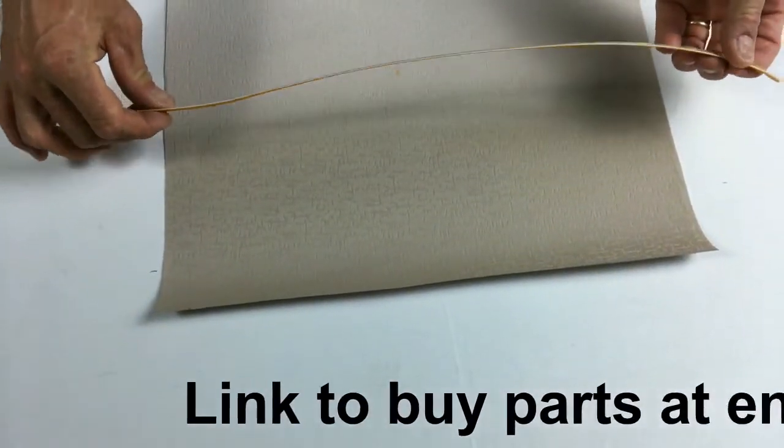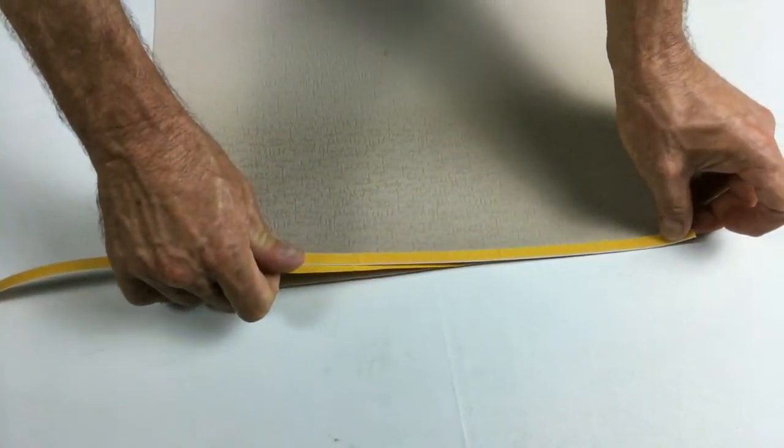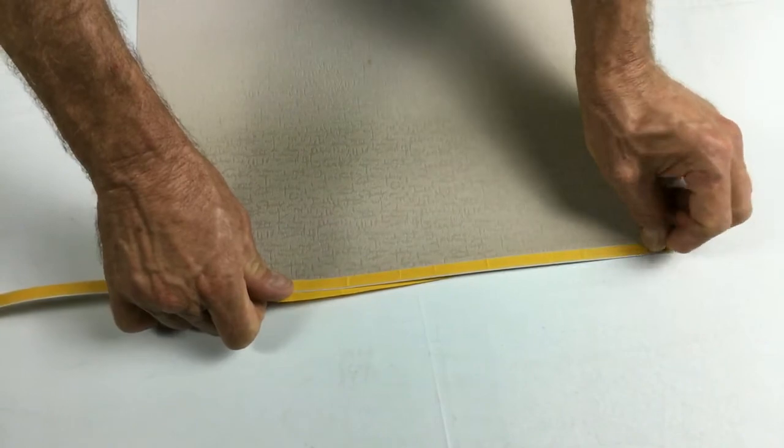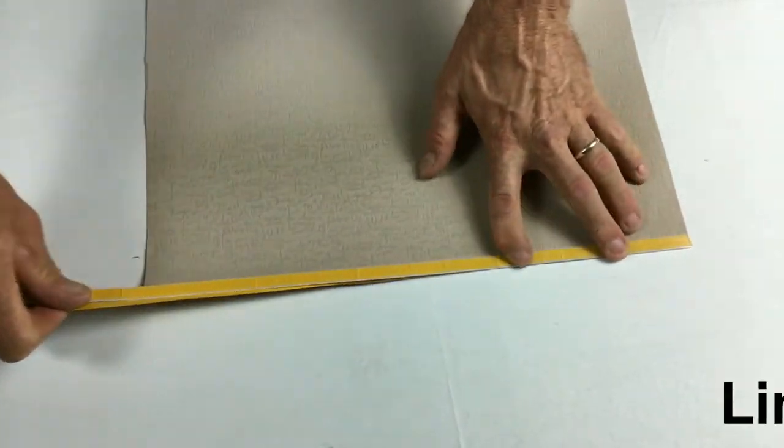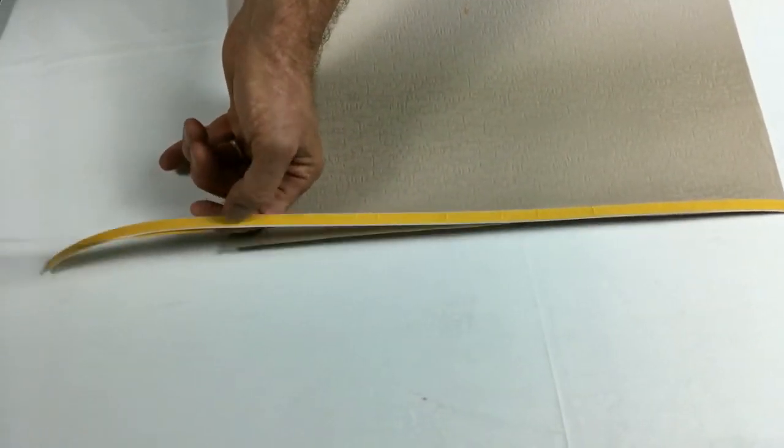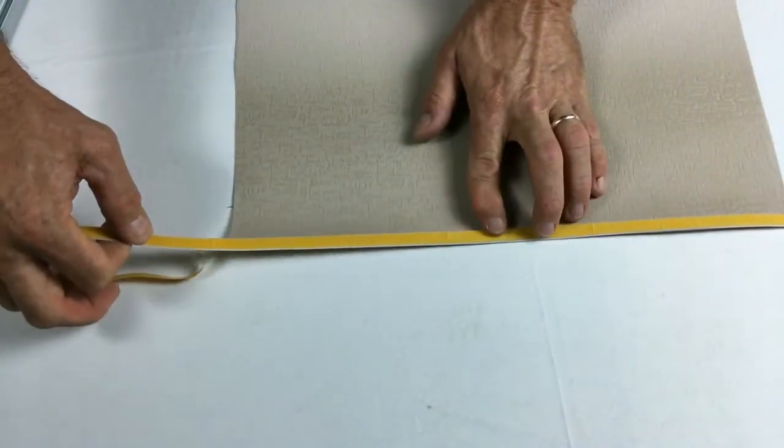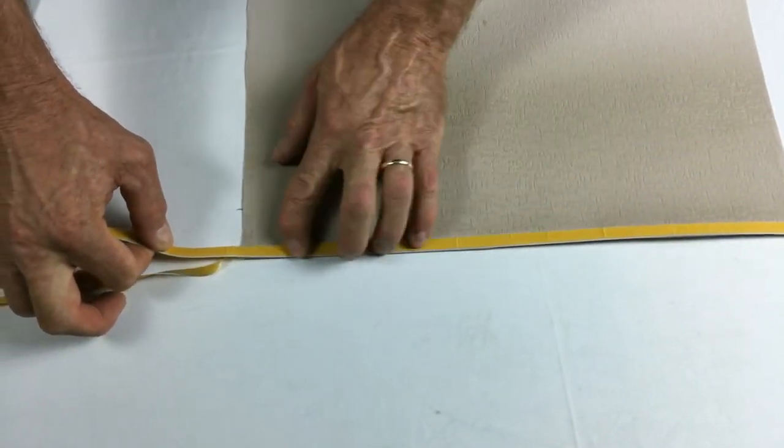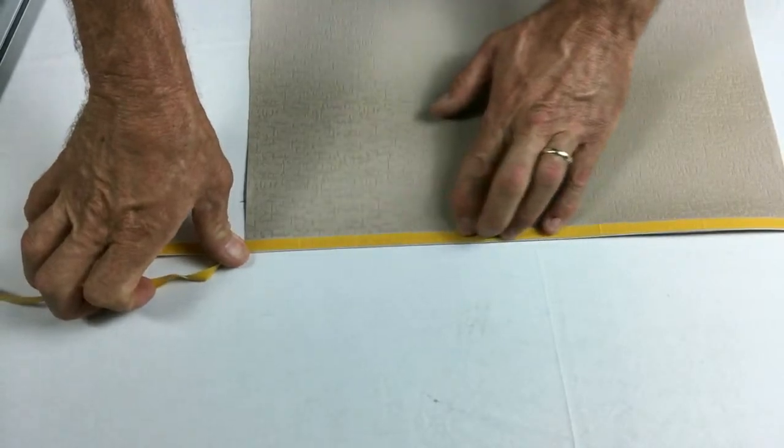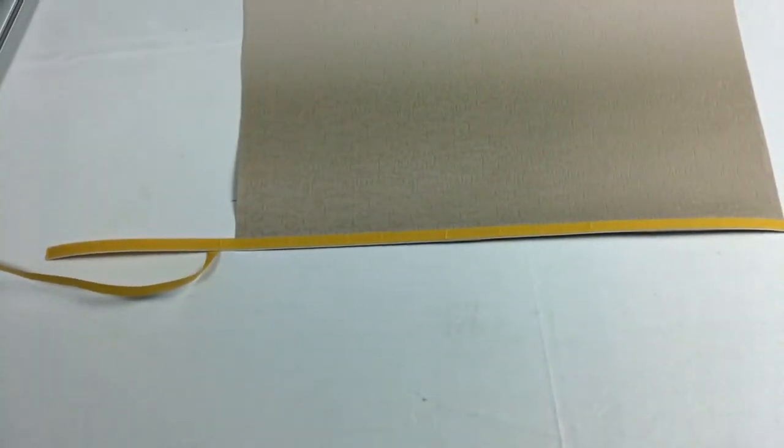From here you would need to put a new piece of spline onto the fabric. Starting off at one end at the very base of the blind, peel off the backing tape and work your way across until you get to the other side.